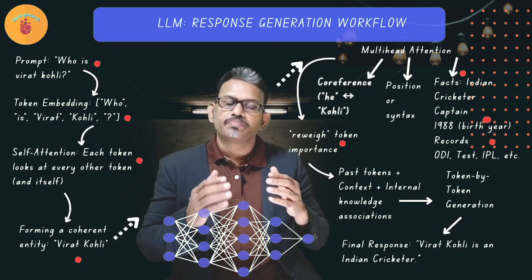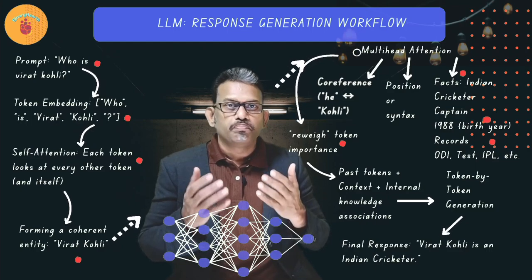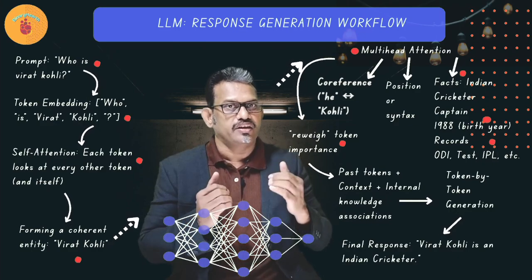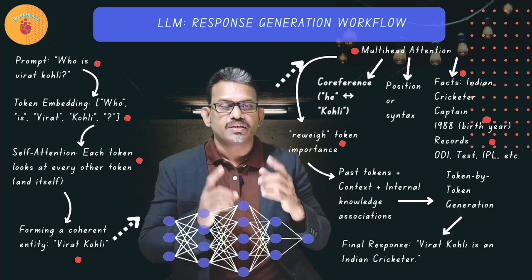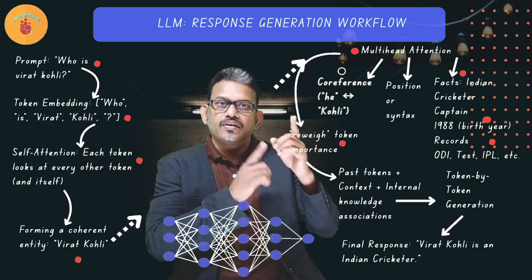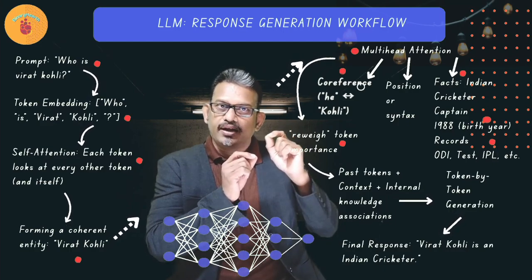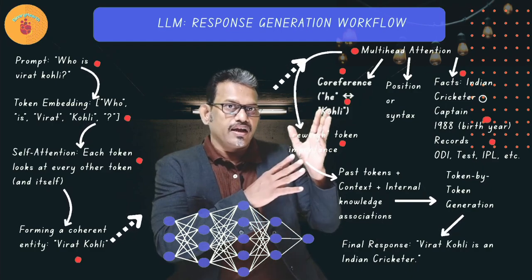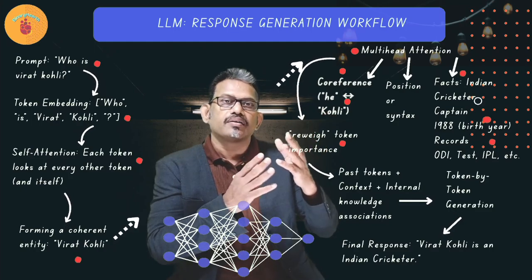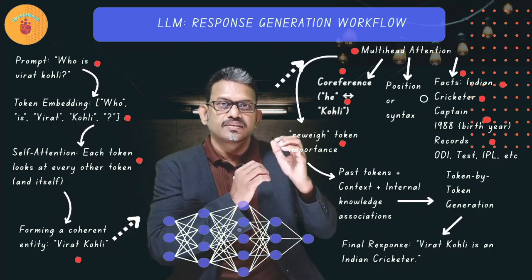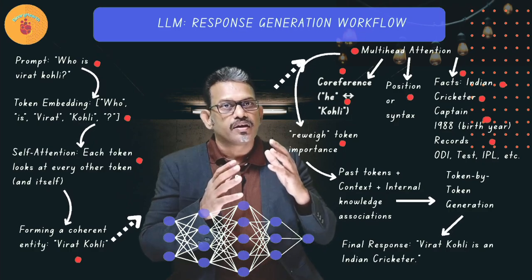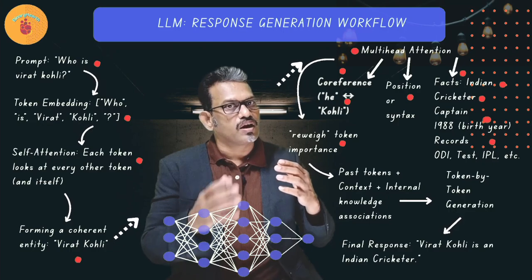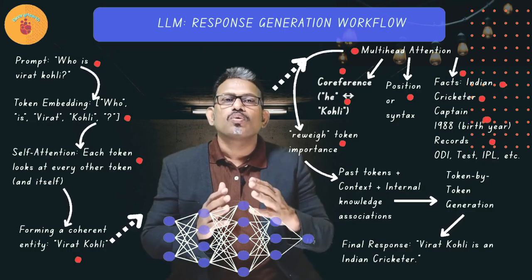It uses multi-head attention. Why? Because it helps the transformer to use multiple attention heads in each layer. Each head can specialize. One might learn coreference, Virat and Kohli related. Another might learn facts: Kohli, India, cricket. Another might learn position and syntax. This allows for rich parallel reasoning, enabling the model to produce detailed, factual, grounded answers.